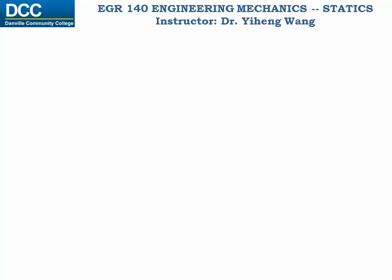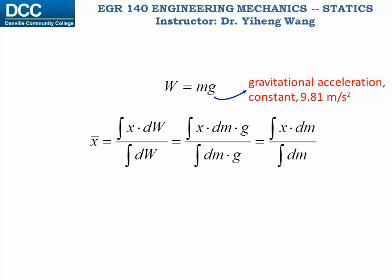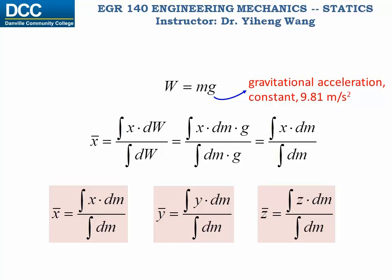We know that weight equals mass times g, which is the gravitational acceleration. For the general near-earth situation it can be considered as a constant, about 9.81 meters per second squared. Therefore the constant g can be cancelled out from the numerator and denominator of this equation, and this new set of formulas now represent the coordinates of the center of mass for the rigid body. In this case, the center of gravity is the same as the center of mass.